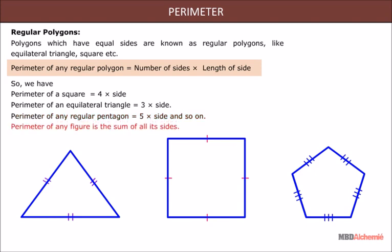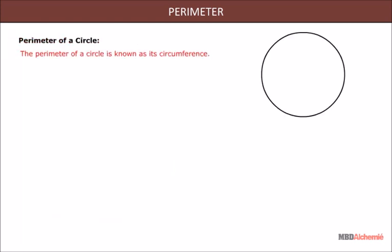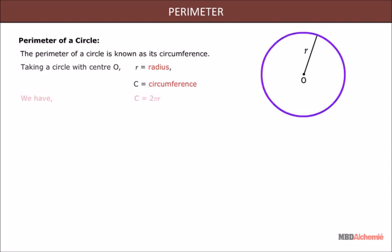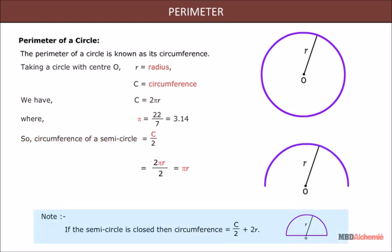Perimeter of any figure is the sum of all its sides. Perimeter of a Circle: The perimeter of a circle is known as its circumference. Taking a circle with center O, radius R, and circumference C, we have C equal to 2πR, where π equals 22/7 or 3.14. The circumference of a semicircle is half of the circumference of a circle, which equals πR.